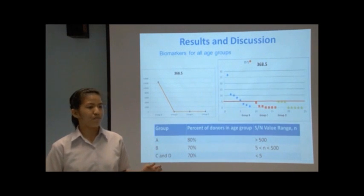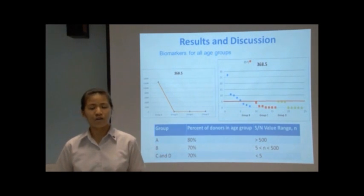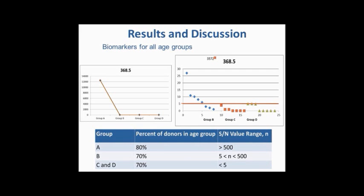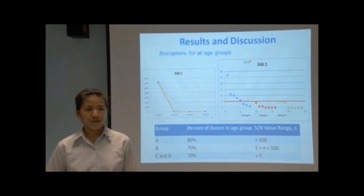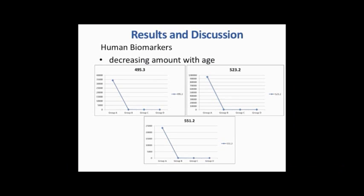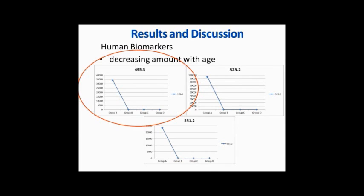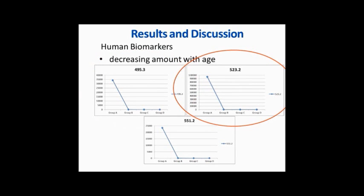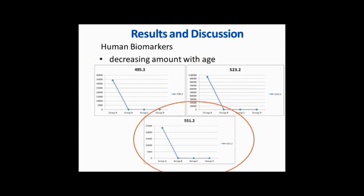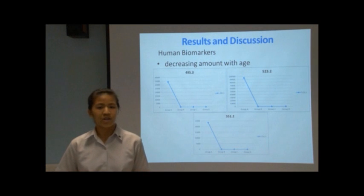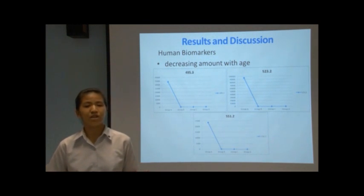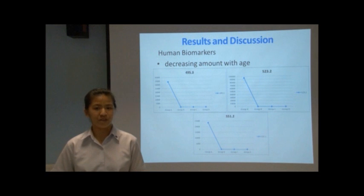The same principle applies for the second biomarker for all age groups: the compound with the mass-to-charge ratio of 368.5. Finally, moving on to the human biomarkers, these three graphs show the average signal-to-noise ratio against donor age group for the three different human biomarkers: the compounds with mass-to-charge ratios of 495.3, 523.2, and 551.2. The graphs clearly show a general trend of decreasing signal with age.